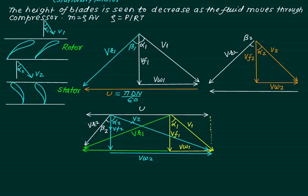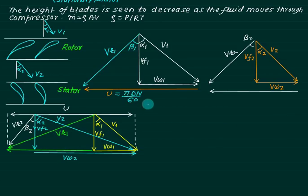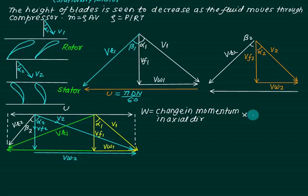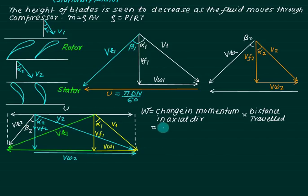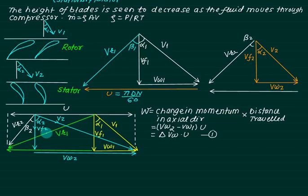We will now derive the expression for work done. The work done on air per unit mass basis — specific work — is given by w equals U multiplied by the change in momentum in the axial direction. The change in whirl velocity is defined as Vw2 minus Vw1, written as delta Vw. We assume Vf1 equals Vf2 equals Vf, the axial velocity, which is constant throughout the stage.